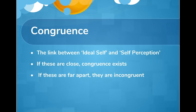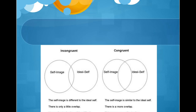Another concept within the humanistic approach is congruence. Congruence is linked to our self-identity - what we are now - and our self-perception, what we see ourselves as being. The idea of congruence is that if these two things are close, you have congruence, and that's a good thing. But if these two things are far apart, they're incongruent, and that's a bad thing. A diagram here represents that - the first section is incongruent, with a big gap between the self-image and the ideal self.